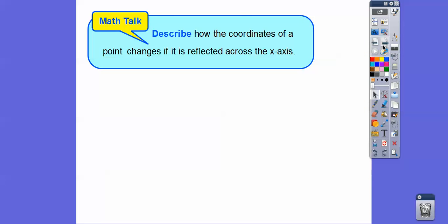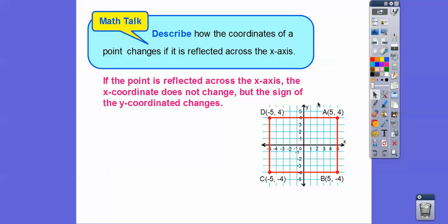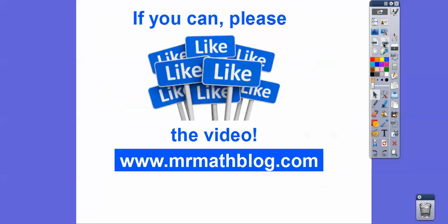To describe how coordinates change when a point is reflected across the X-axis: the X-coordinate stays the same — it goes from 5 to 5 — but the Y-coordinate changes sign, going from 4 to negative 4. All right, I hope you're having a fantastic year. Take care.